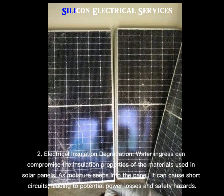Electrical insulation degradation: Water ingress can compromise the insulation properties of the materials used in solar panels. As moisture seeps into the panel, it can cause short circuits, leading to potential power losses and safety hazards.